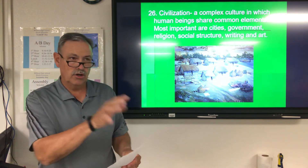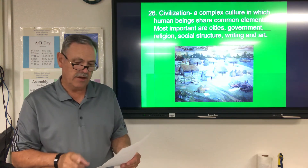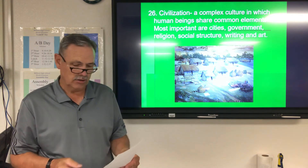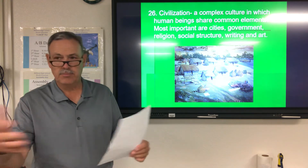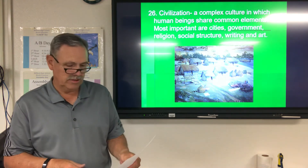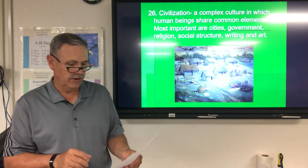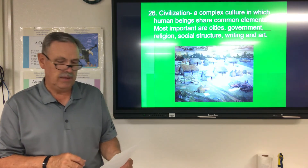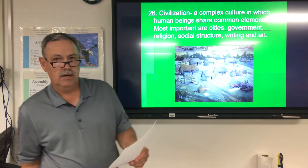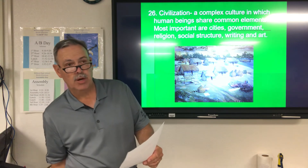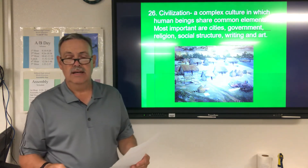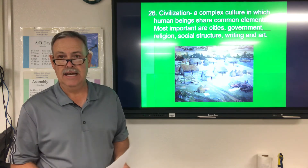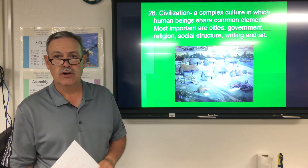The early man we're studying may not have had cities until later when systematic agriculture came about. If they were spread out, a government wasn't really needed. But religion was very important. They probably had some basic social structure, and writing likely came later as they developed. But they definitely had art — the cave art that we've seen.